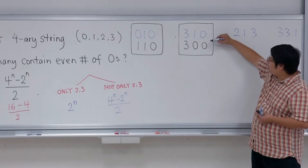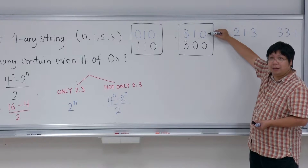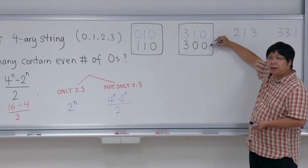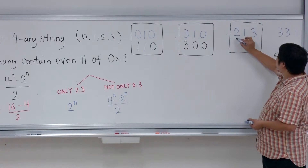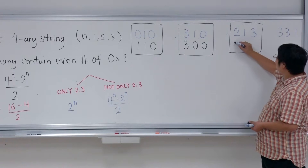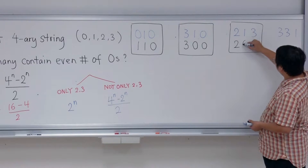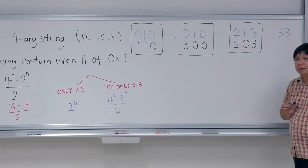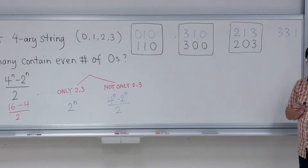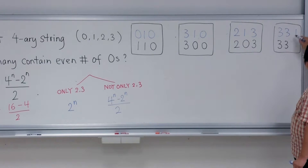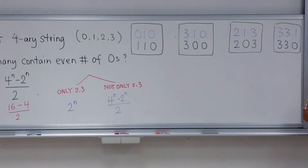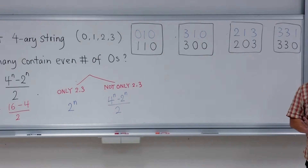For the string 3-1-0, we keep the three, then this is the first position which is zero or one, and we switch it to the other side. These two strings form a group. For 2-1-3, you keep the two, switch the one to zero. For 3-3-1, you keep the threes, switch the one to zero.